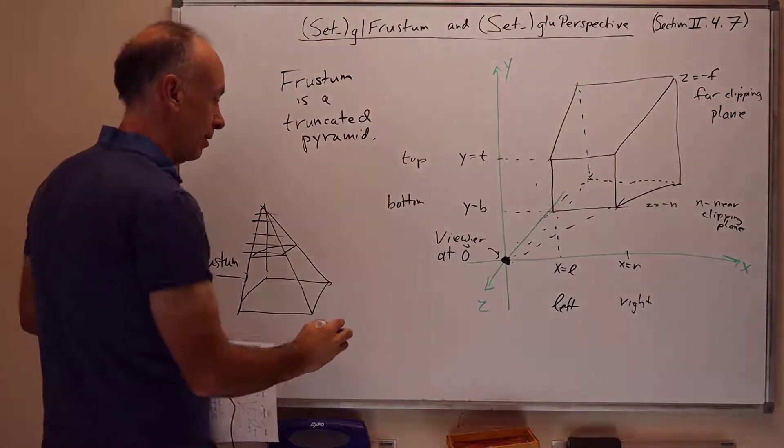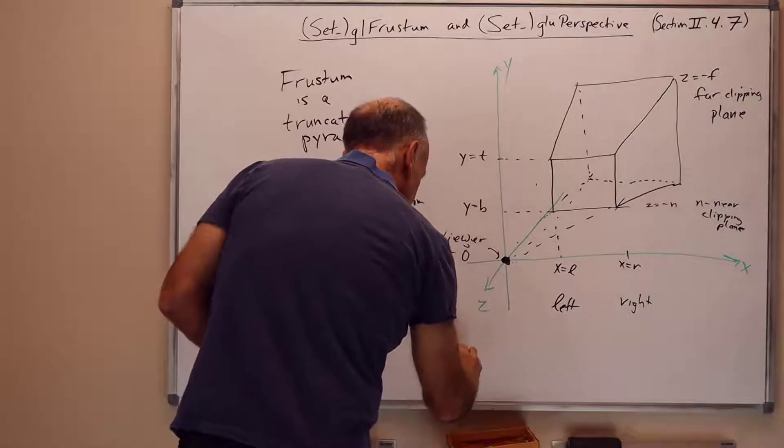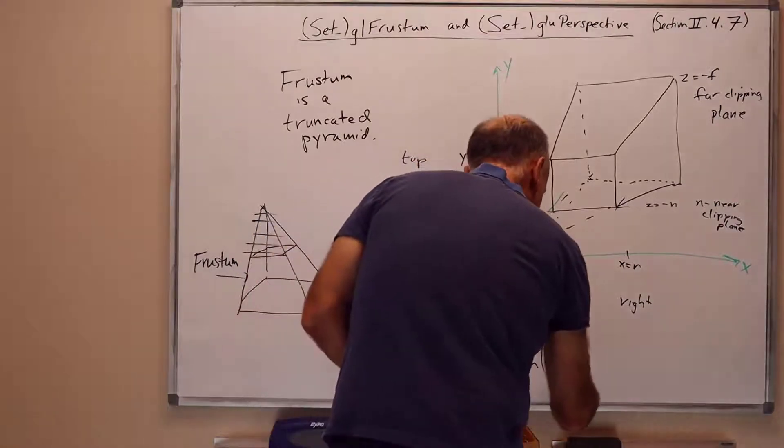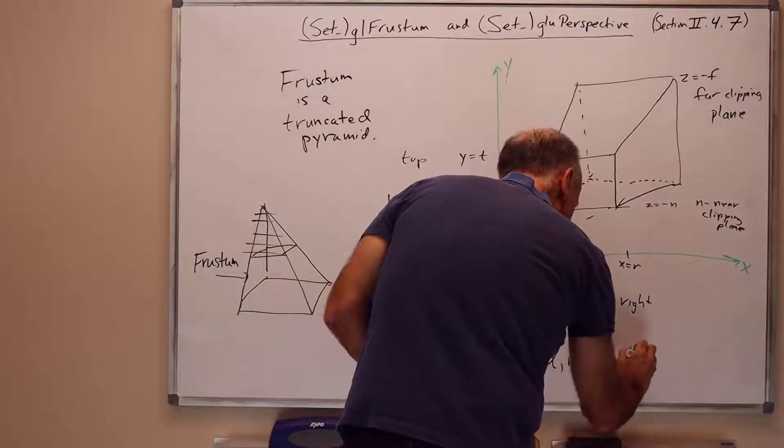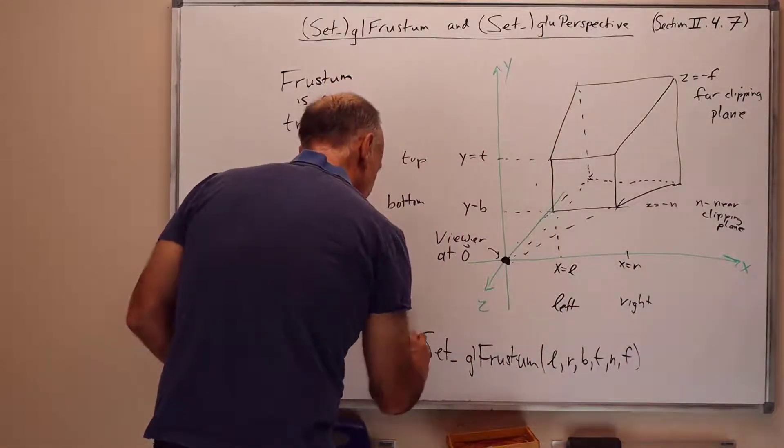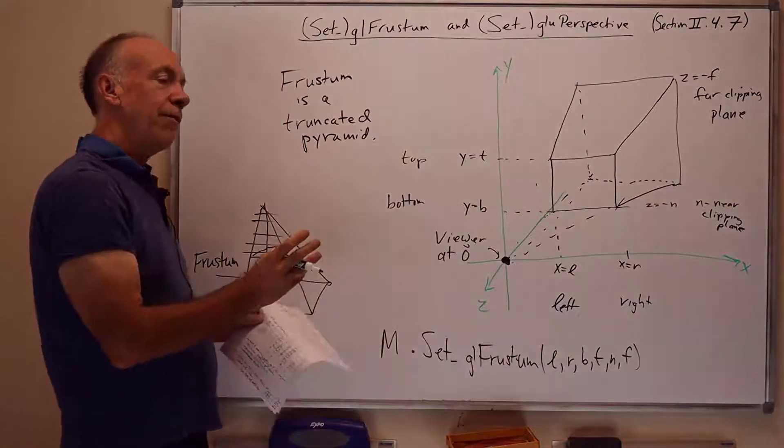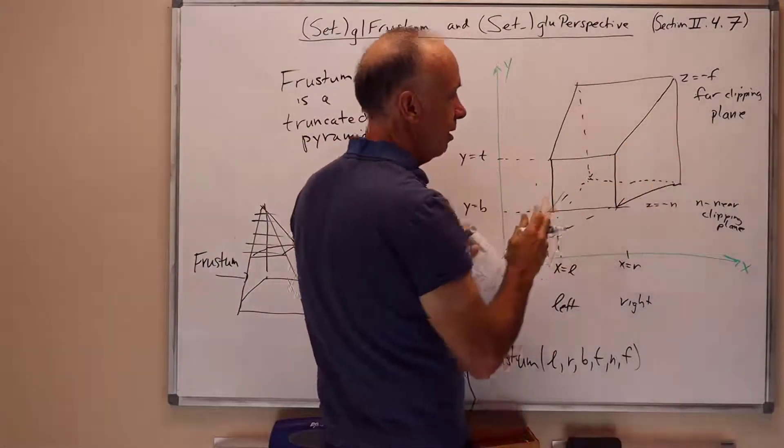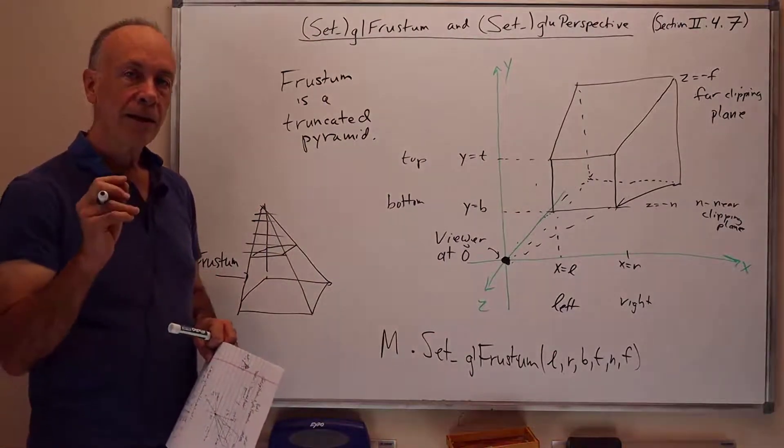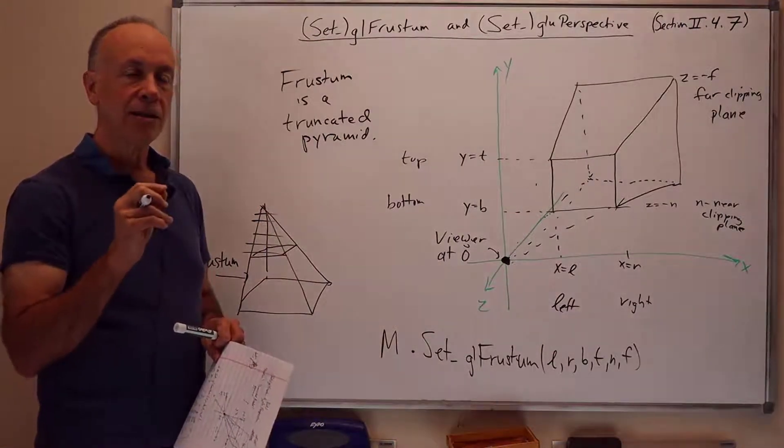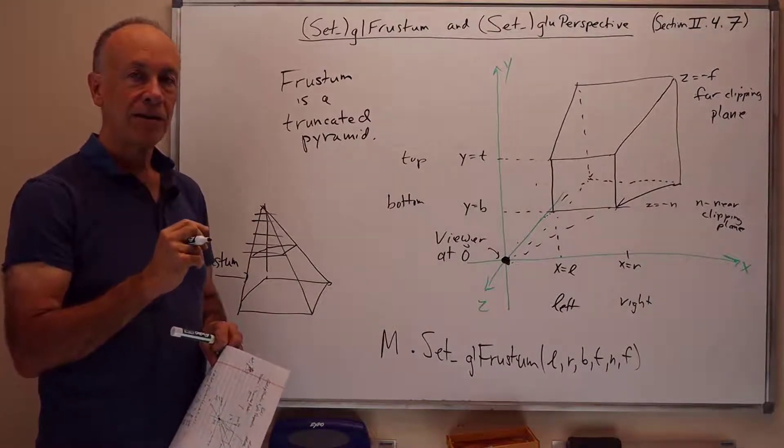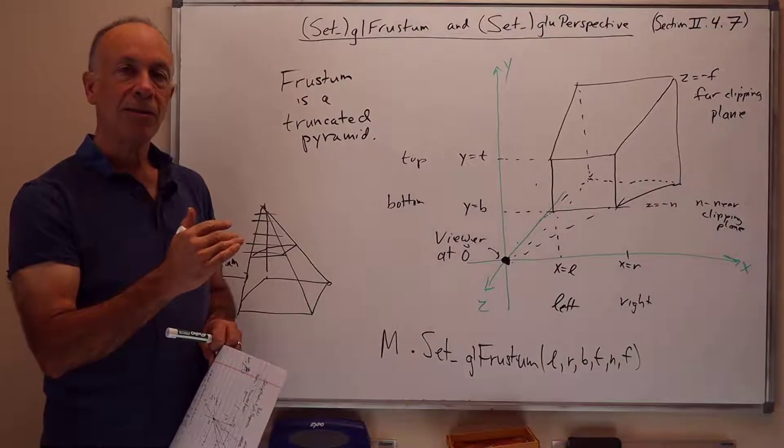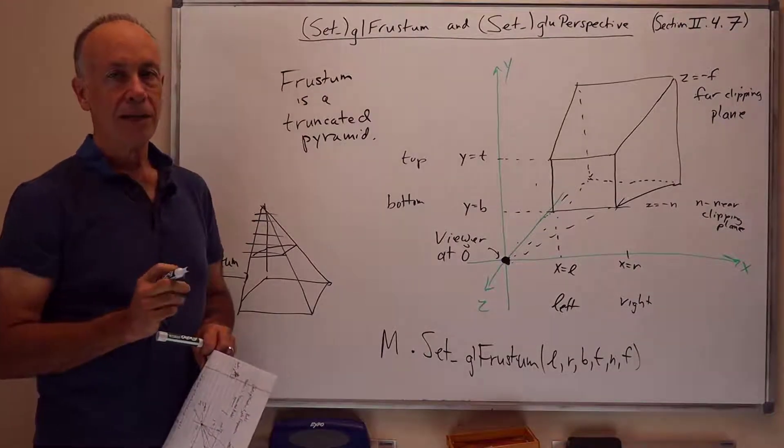The command for gl frustum is, you just do the following. I'll do the set version. Set gl frustum takes left, right, bottom, top, near, far. And it sets the current matrix. This sets the matrix M equal to the matrix which applies a perspective transformation and maps this frustum into the 2 by 2 by 2 cube with x values ranging from minus 1 to 1, from the left of the screen to the right of the screen. Y values ranging from minus 1 to 1 from the bottom of the screen to the top of the screen. And pseudo distance values ranging from minus 1 to 1 for the near clipping plane and the far clipping plane.